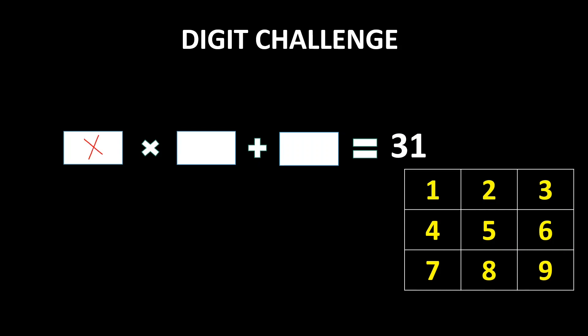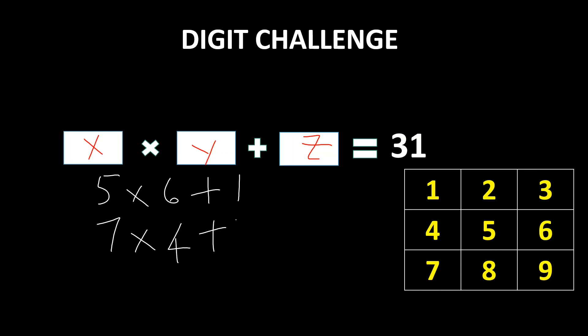For example, in this case where x multiplied by y plus z should give 31, you have plenty of options like 5 into 6 plus 1 equals 31, or 7 into 4 plus 3 equals 31, and so on. Note that you have to keep the operators in mind while solving this question because of the BODMAS rule — division first, multiplication next, followed by addition.